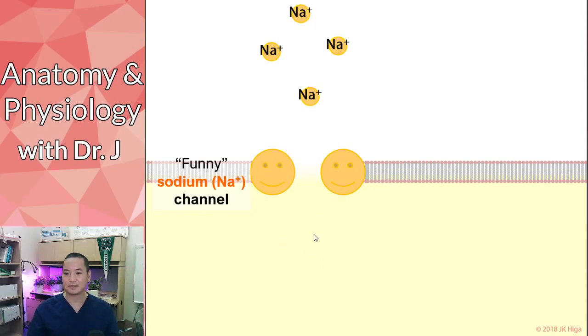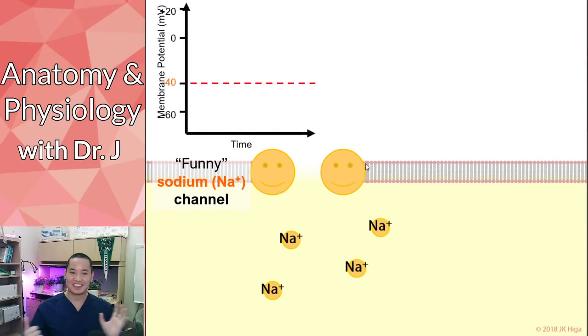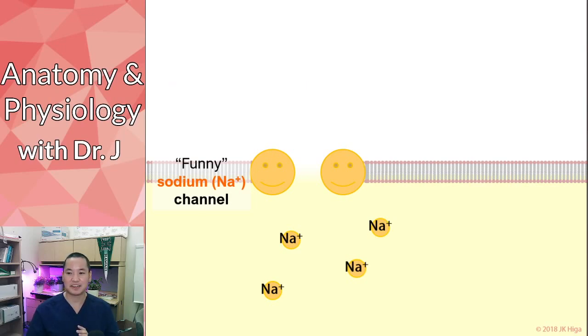All right, back to our pacemaker cells. So what we have here, there's something called these funny currents. And these are special sodium channels that allow sodium ions to slowly leak in. Now, given our very basic definition of being borderline inaccurate, so what would happen to the membrane potential inside the cell if you have sodium ions slowly leaking in? Let's ask the chat. Did it get more positive or negative inside the cell?